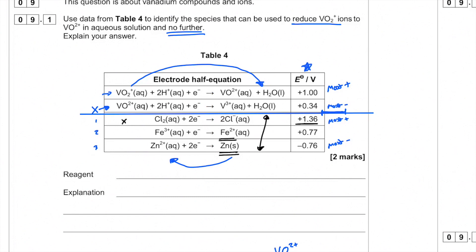However, we're looking for something that will reduce it to VO2+ but no further. We notice we've got VO2+ going to V3+ on the left-hand side. We do not want that to happen. So what we're looking for is something that has a value between +0.34 and +1.00, which is of course Fe2+. This here is +0.77, so it will reduce VO2+, but it won't reduce VO2+ to V3+. So our reagent here is Fe2+. Zinc, of course, is more negative than both of them, so it will reduce it all the way to V3+. We don't want that.